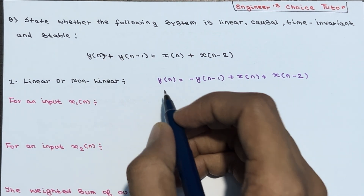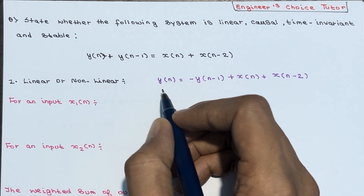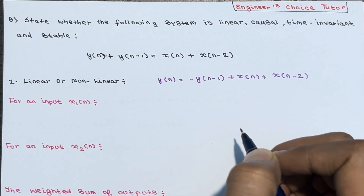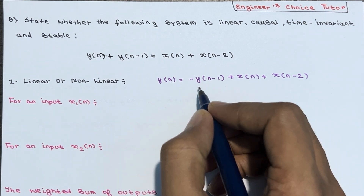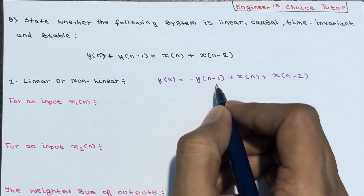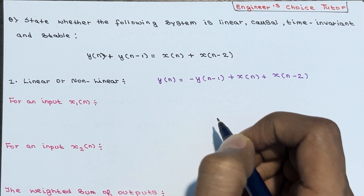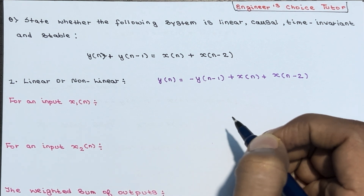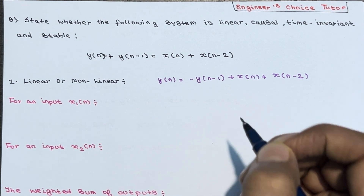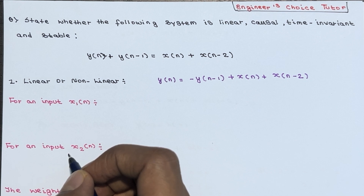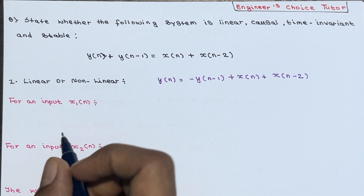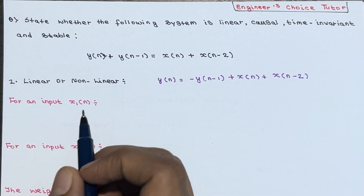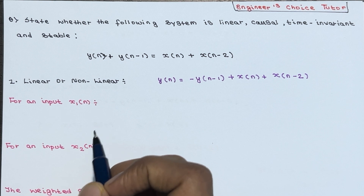So at present the output is y(n), and y(n-1) is the past output. Let's check for linearity first — whether the system is linear or non-linear.